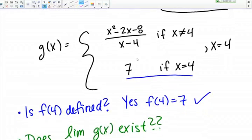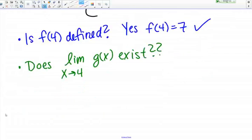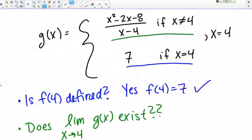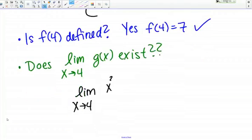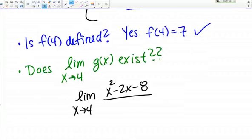So I'm looking at the limit as x goes to 4. Remember I don't actually care what the function is doing right at 4. I'm only concerned about what's happening near 4. So when I take the limit, I'm actually going to be taking the limit of this top piece here, of this rational function. To answer this question, I want the limit as x goes to 4 of x squared minus 2x minus 8 over x minus 4.